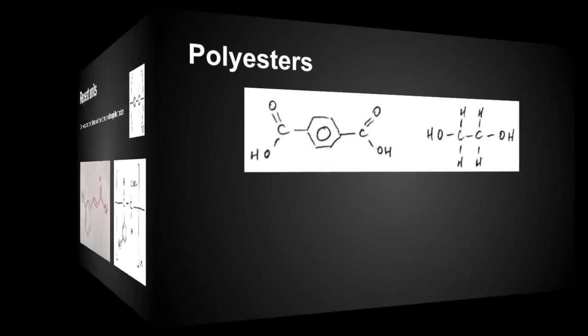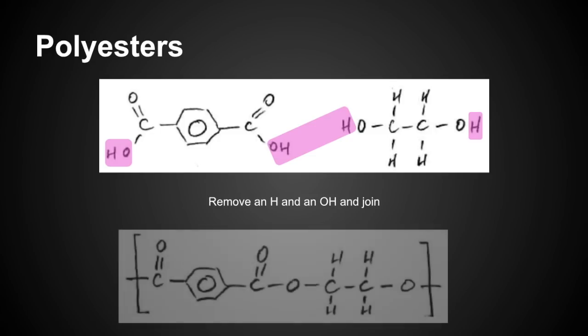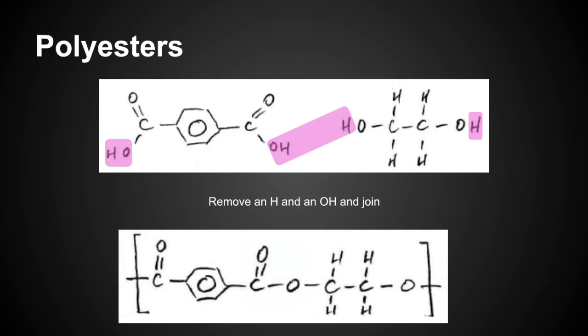Continuing the theme of polymers, we'll move on to condensation polymers. Polyesters first. We've got a dicarboxylic acid on the left and a diol on the right. They can join together and form polyesters because we've got the functional groups at either end. All we need to do is remove an H and an OH and join together. I'm choosing to take the OH from the carboxylic acid group, and I'm taking the H from the alcohol groups. If we take them out, they're going to form water molecules. We're left with that. That's the ester linkage in the middle, that's why it's called a polyester.